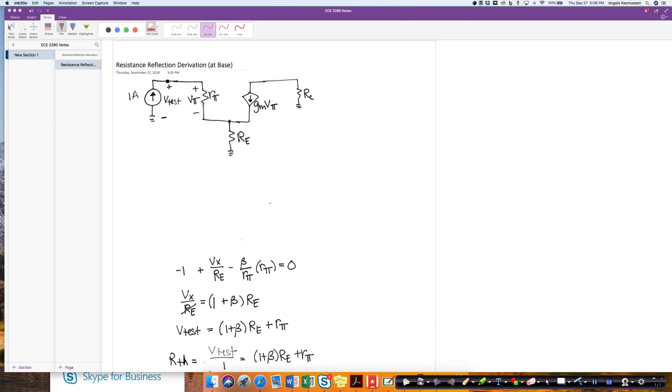This is the derivation of finding an equivalent resistance when we want to find the equivalent resistance at a base. That means I want to find from this node to ground the equivalent resistance.